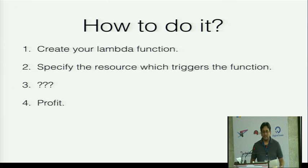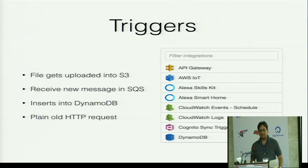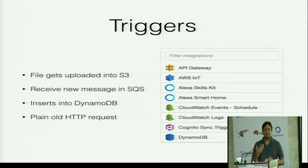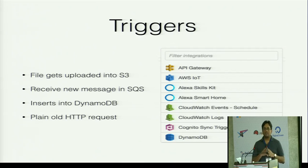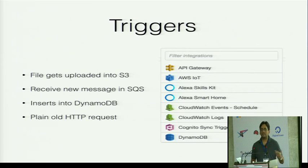How do people do it? Step one: create a Lambda function. Step two: specify which AWS resource needs to trigger the function, and profit. There are multiple triggers you can use — for example, someone uploads a file to S3, a message gets pushed to SQS (Amazon's queuing system), SNS (Amazon's notification system), or an insert happens into DynamoDB (a NoSQL system). The one I'm concentrating on today is HTTP requests. Whenever someone hits a URL in your system, your Lambda needs to run, do something useful, and return a JSON response.